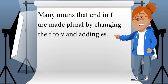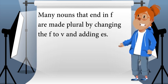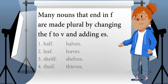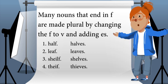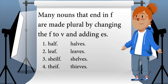Many nouns that end in f are made plural by changing the f to v and adding es. Half becomes halves, leaf becomes leaves, shelf becomes shelves, thief becomes thieves.